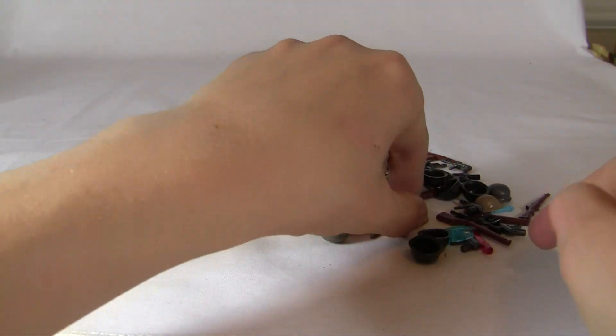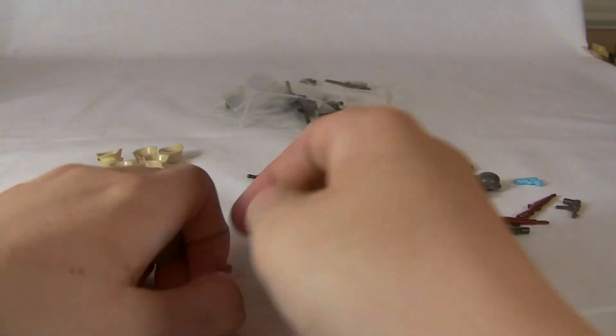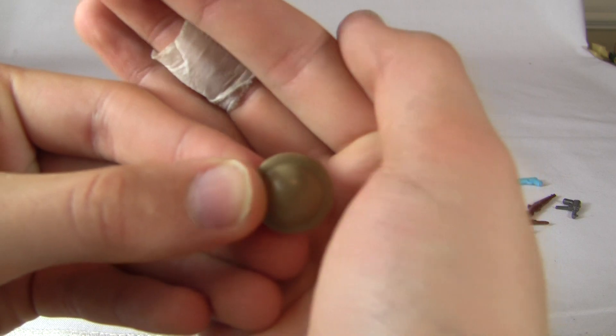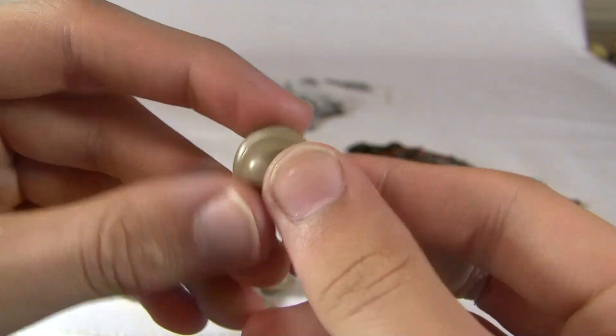Then we got, I believe, 6 dark tan Brody helmets. Yeah, 6. Sorry for my little tape there. So we got 6 of those.